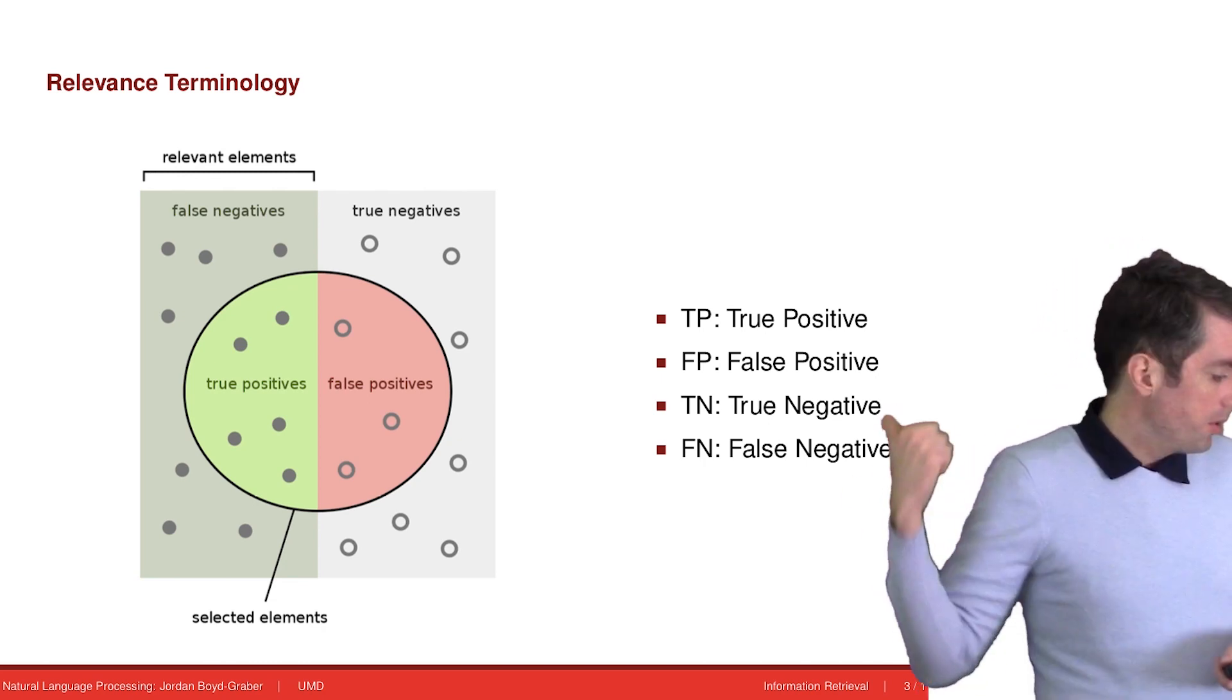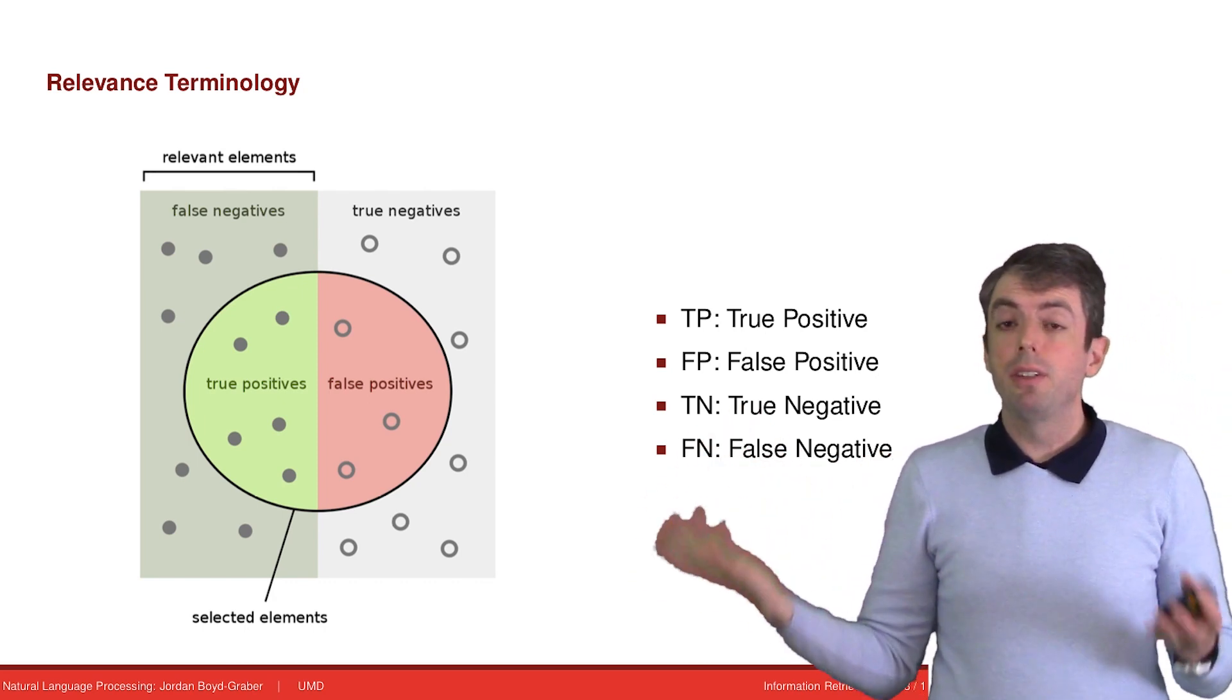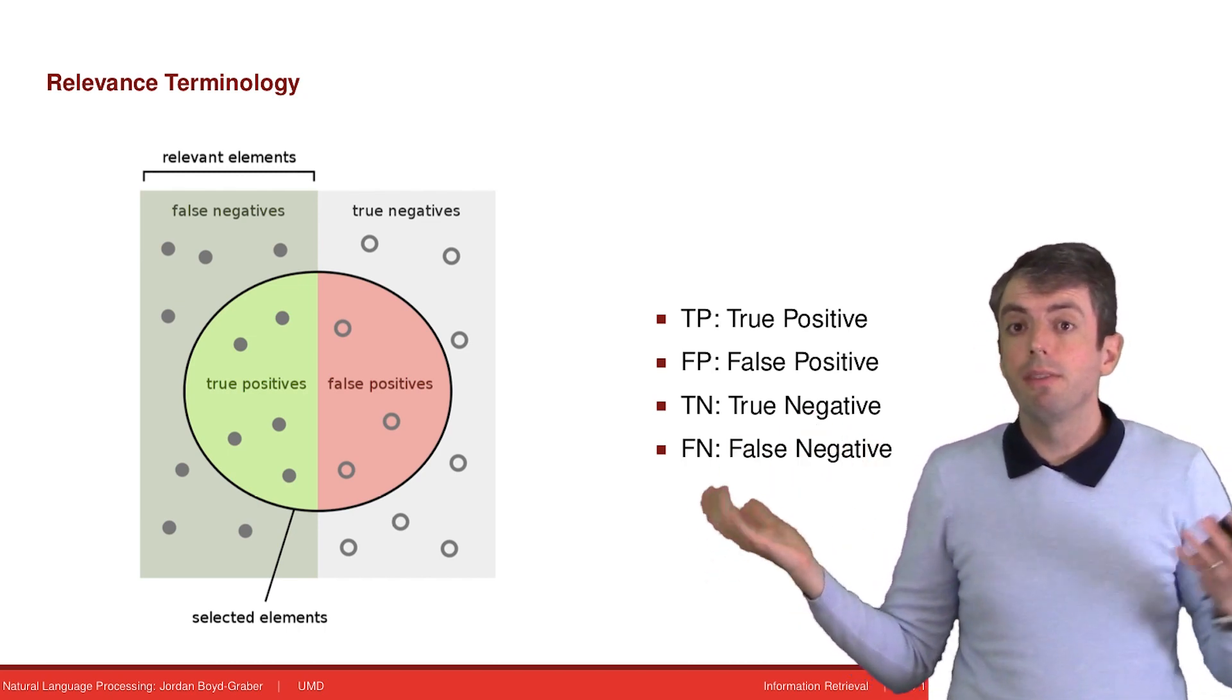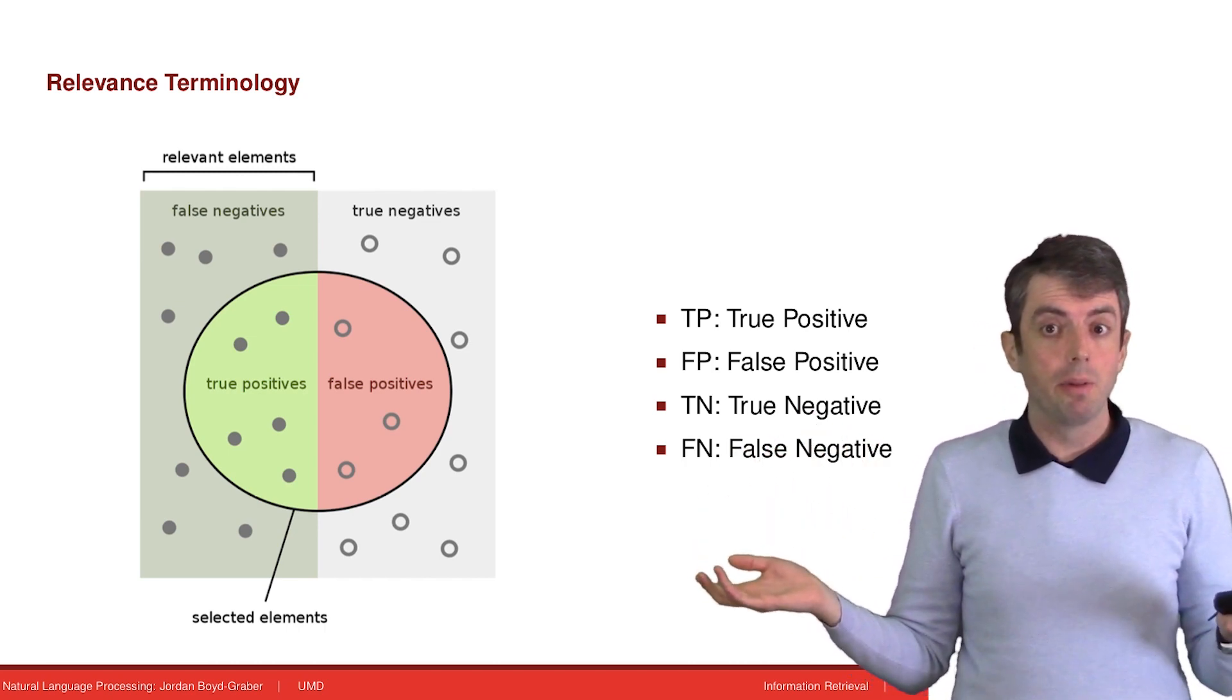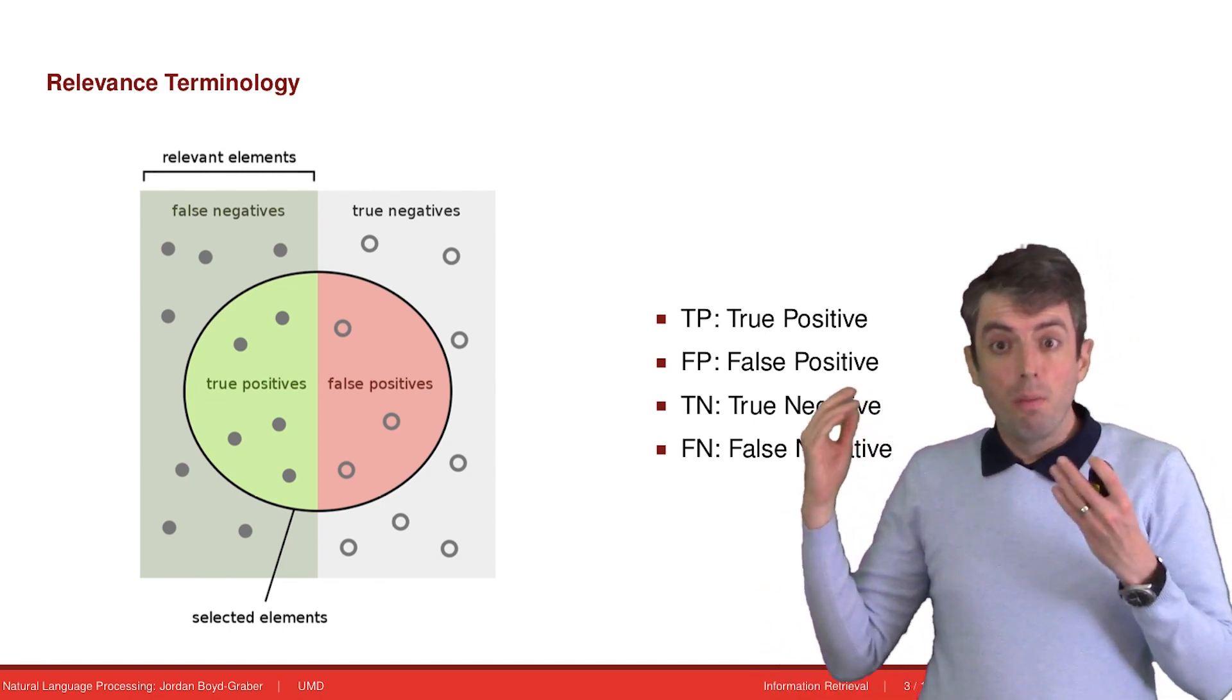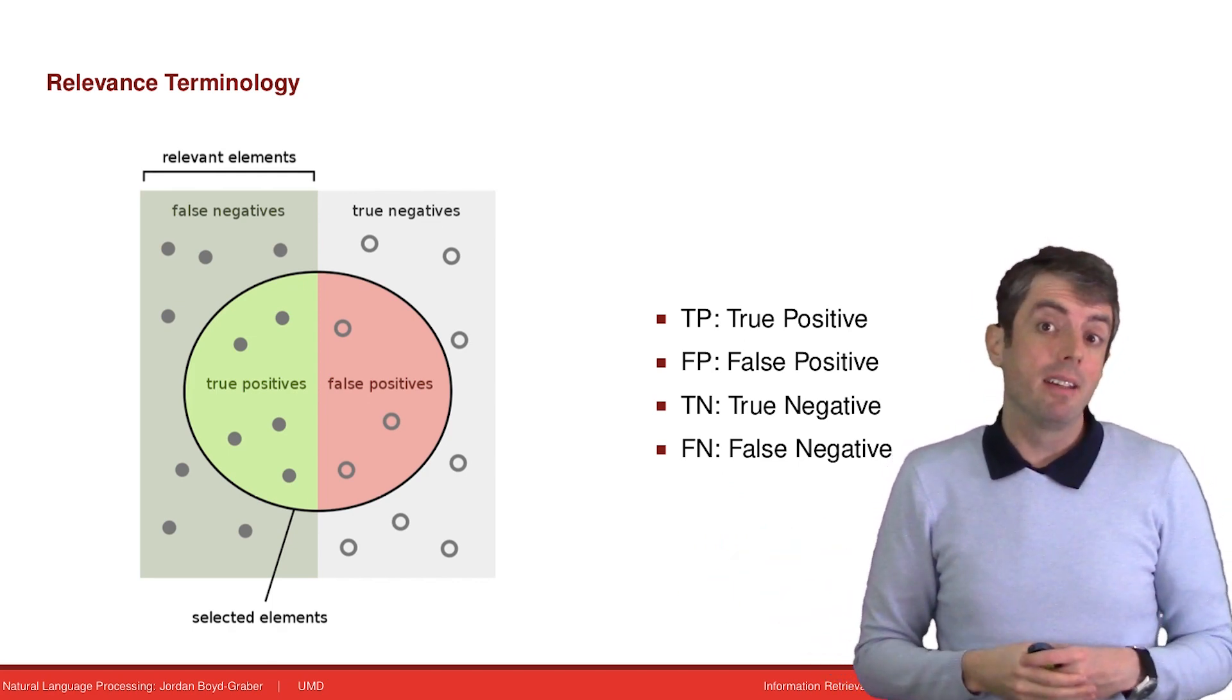And then finally, there are true negatives. True negatives are documents that are irrelevant, and you didn't return them. This is the vast majority, in most cases, of documents. Your system didn't say that they were relevant, and they actually aren't relevant. Because for any given query, most documents are not going to be relevant, and most systems will not say that they're relevant.